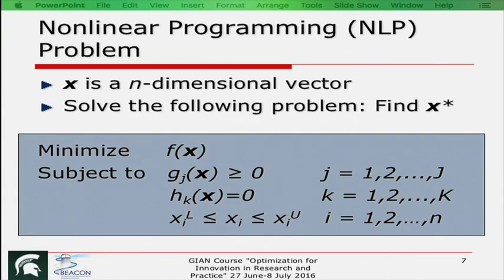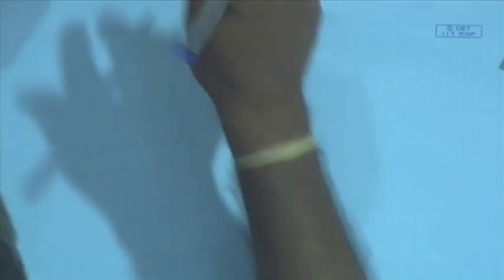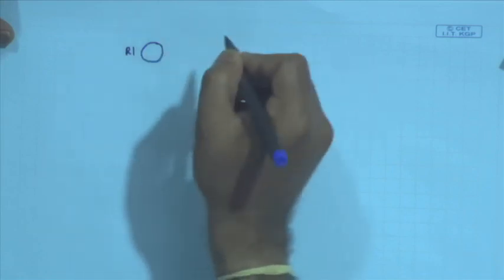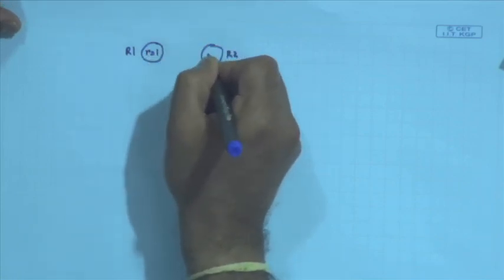After you read the problem once, it is not enough to remember everything. You have to make some kind of sketch to understand. Here the first line says: a large steel corporation has two iron ore reduction plants. So there is reduction plant R₁ and R₂ — let me draw it. There are two plants: R₁ and R₂, with small index r = 1 and r = 2, so small r indexes which reduction plant it is.